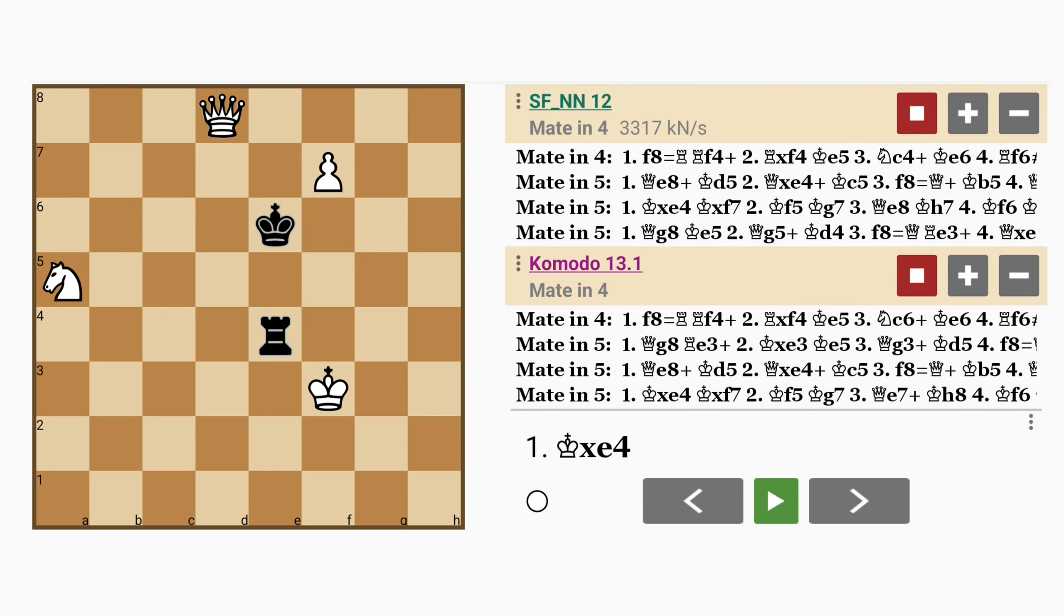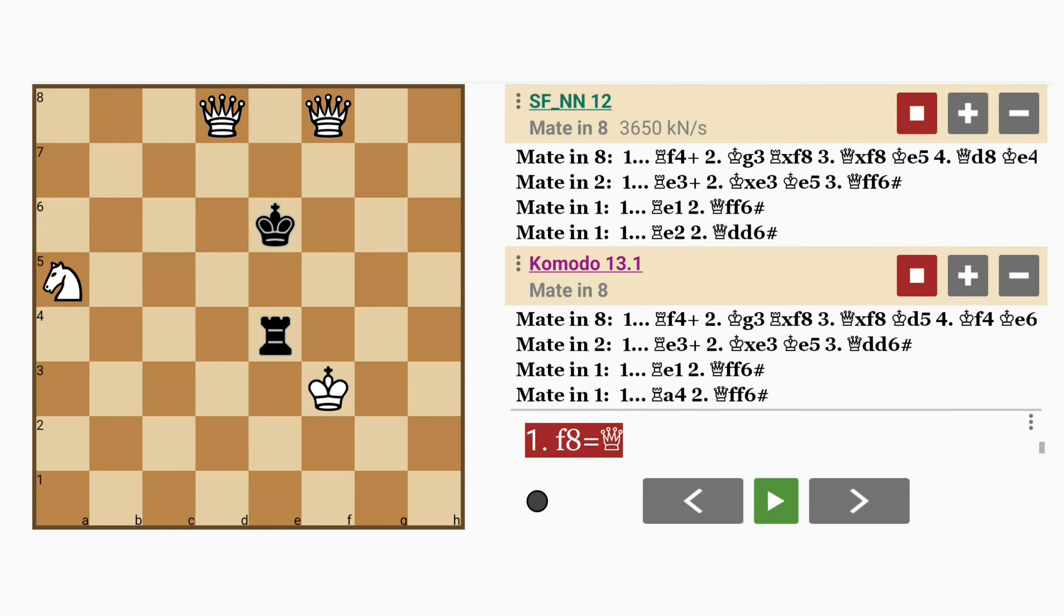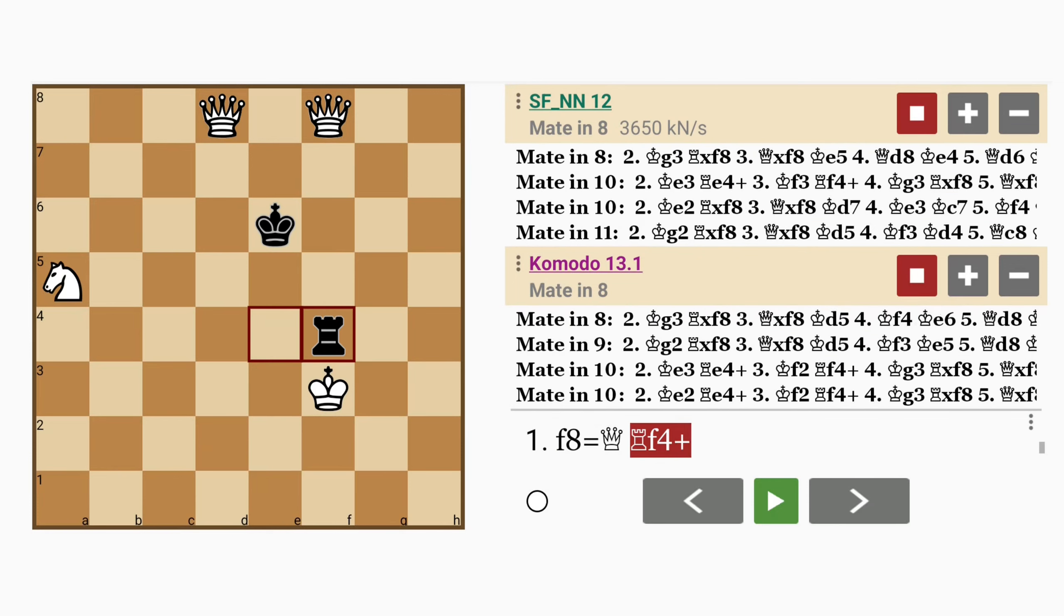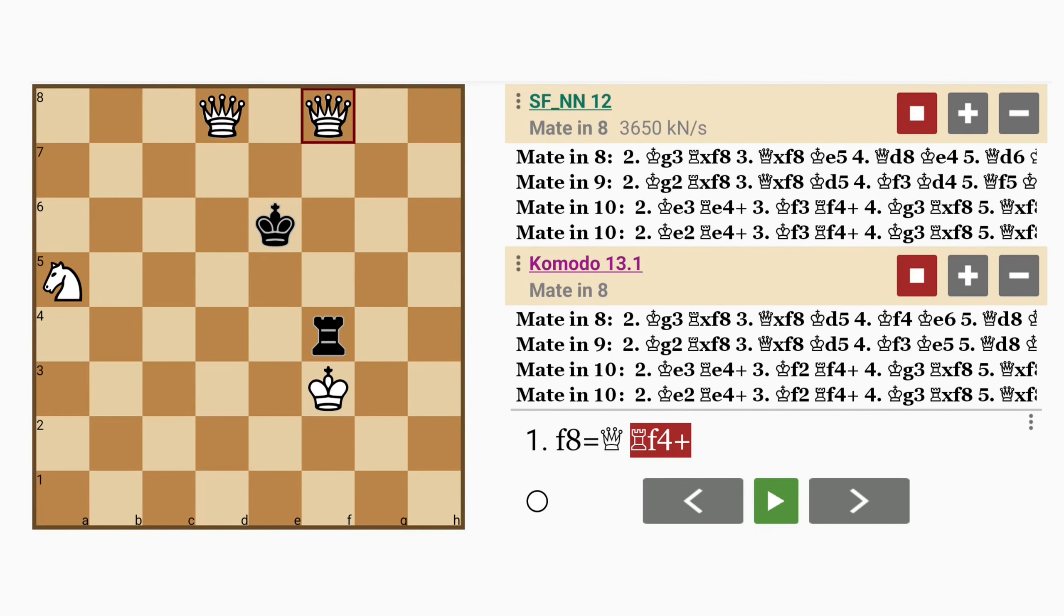So you might be asking yourself, why doesn't promoting to a queen work? Well, because of rook to f4 check. Now here, if queen captures rook, this is a stalemate.